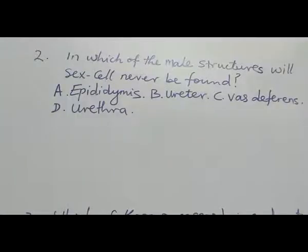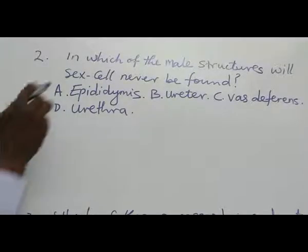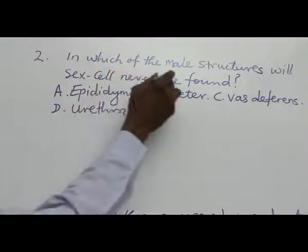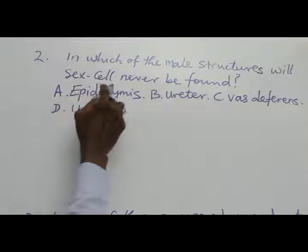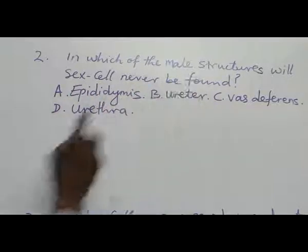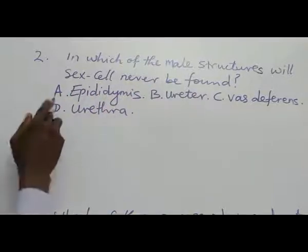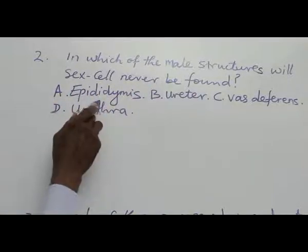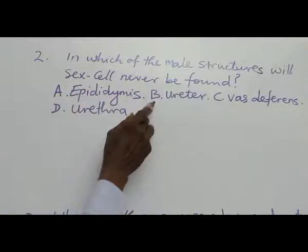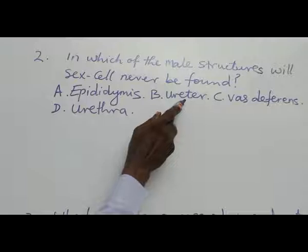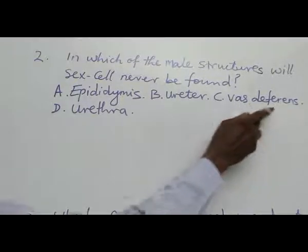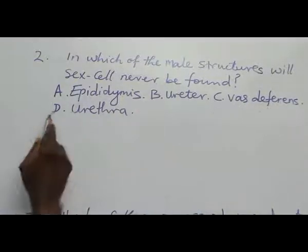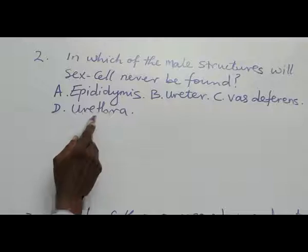Question 2: In which of the main structures will sex cells never be found? A: Epididymis. B: Ureter. C: Vas deferens. D: Urethra.